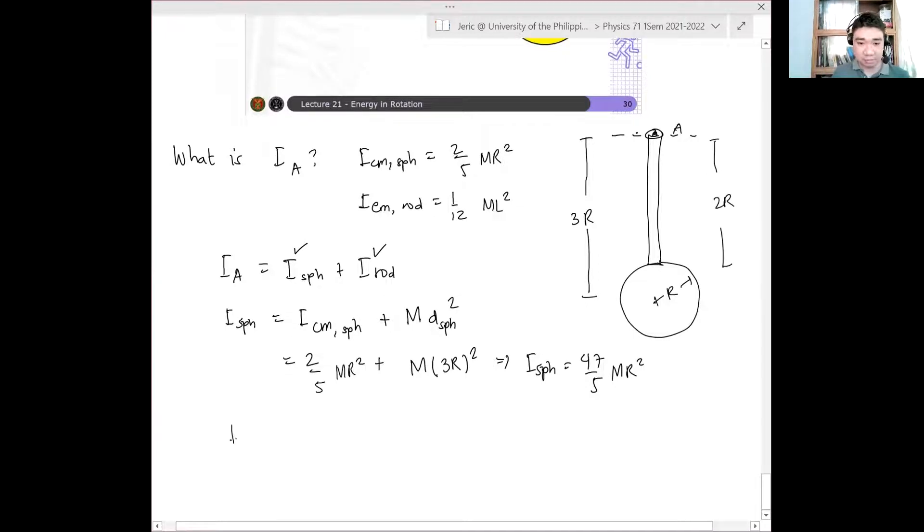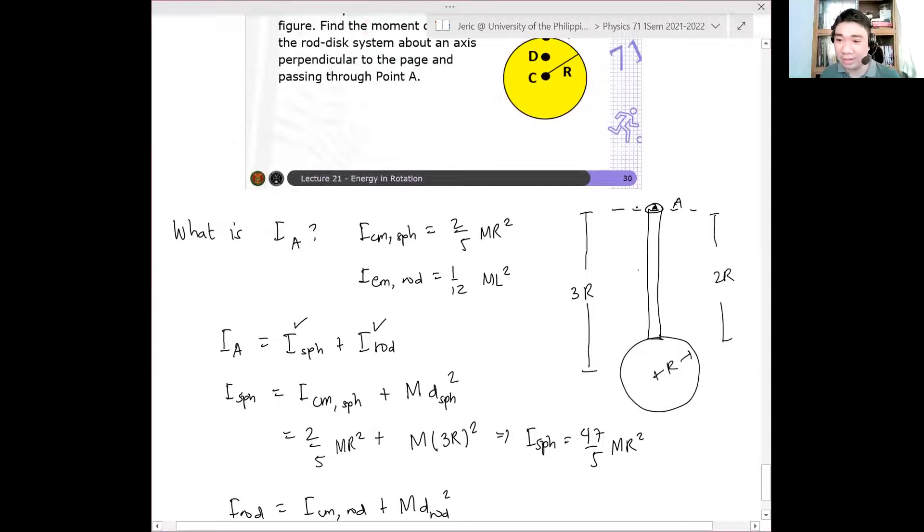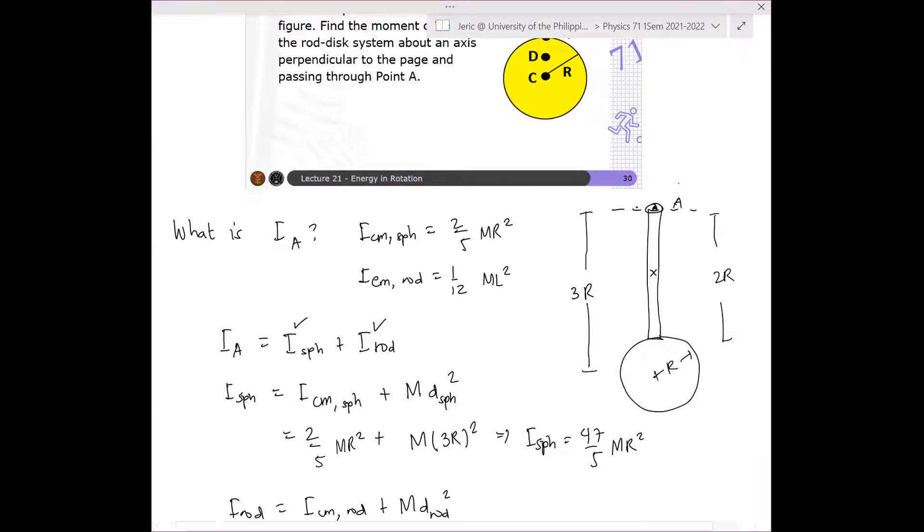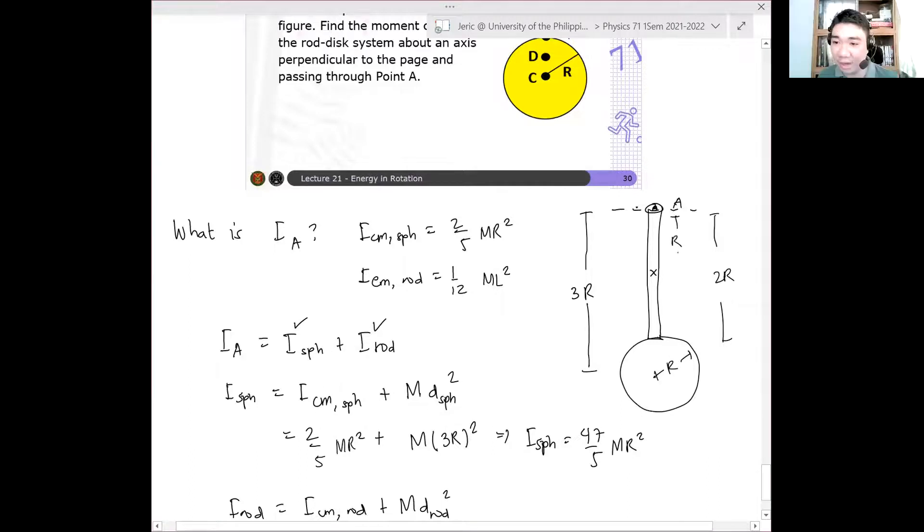Now what about I rod? I rod is simply the sum of the moment of inertia about the center of mass of the rod plus mass times D rod squared, where D rod is the distance from the center of mass of the rod to the axis of rotation. So now, where is that? It's a uniform rod. Therefore, what is the distance of the axis of rotation to the center of mass of the rod? R. Correct.